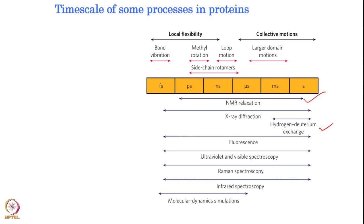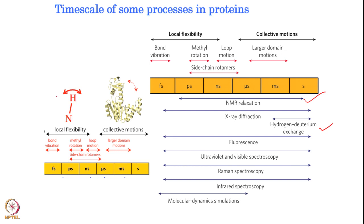On the other hand, NMR is well tuned to give motion information at various time scales in a residue-specific manner or at atomic resolution. One can probe NH bonds in the protein, and that will tell about local flexibility like bond vibration, methyl rotation, loop movement, and side chain rotamers, or collective motion if we understand how two loops or two domains show correlative motion. Larger domain motion comes in the microsecond to second time scale. Essentially, NMR is tuned to provide local flexibility as well as collective motion at atomic resolution, ranging from picosecond to second time scale.